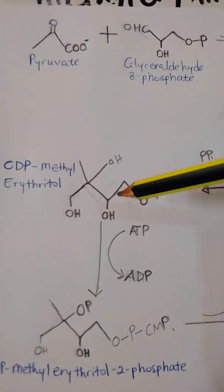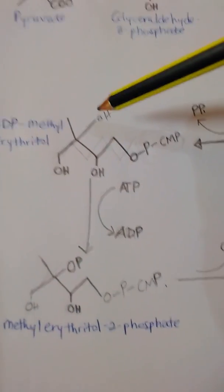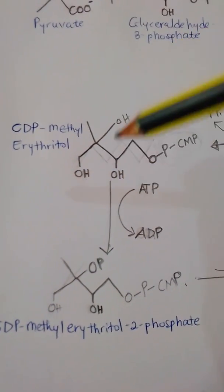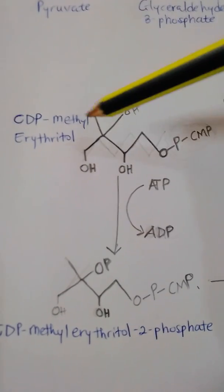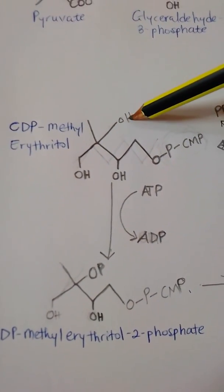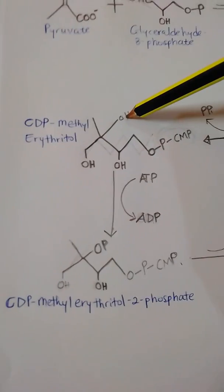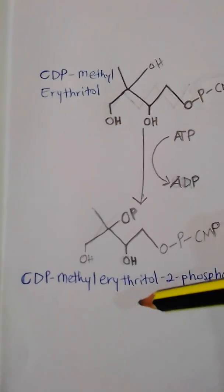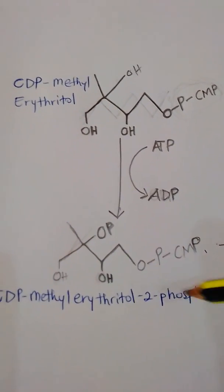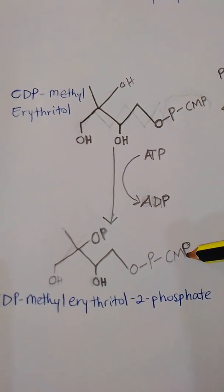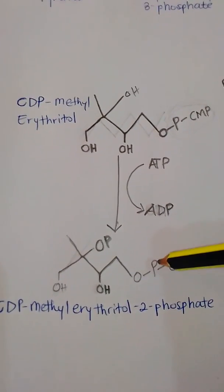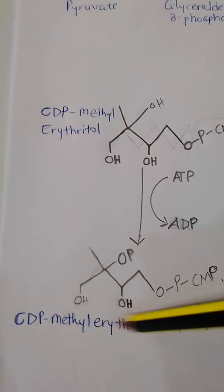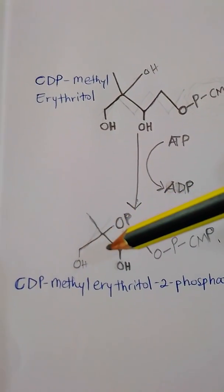The CDP-methylerythritol also undergoes a phosphorylation reaction, and the phosphate group comes from an ATP. One ATP loses a phosphate, which is added to the hydroxy group on the second carbon, to produce CDP-methylerythritol 2-phosphate. The phosphate from CMP is already present, and this new phosphate comes from ATP to produce CDP-methylerythritol 2-phosphate.